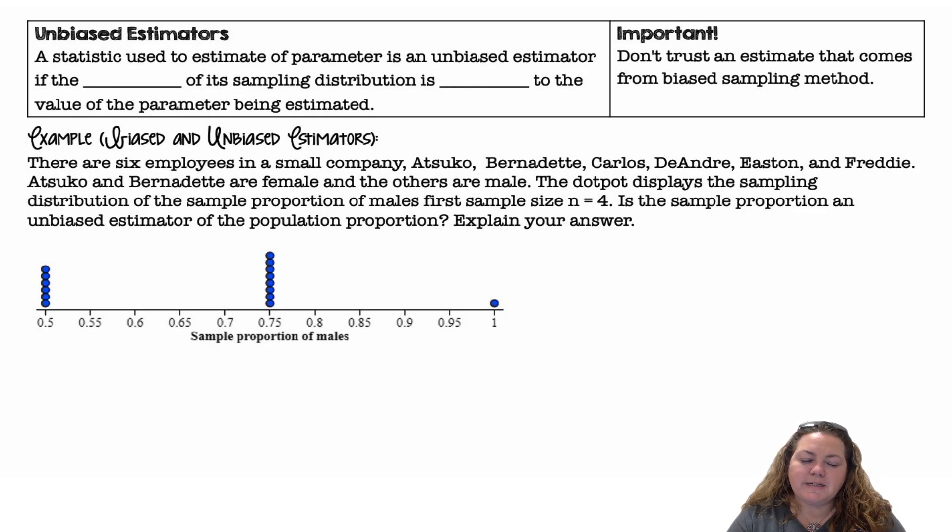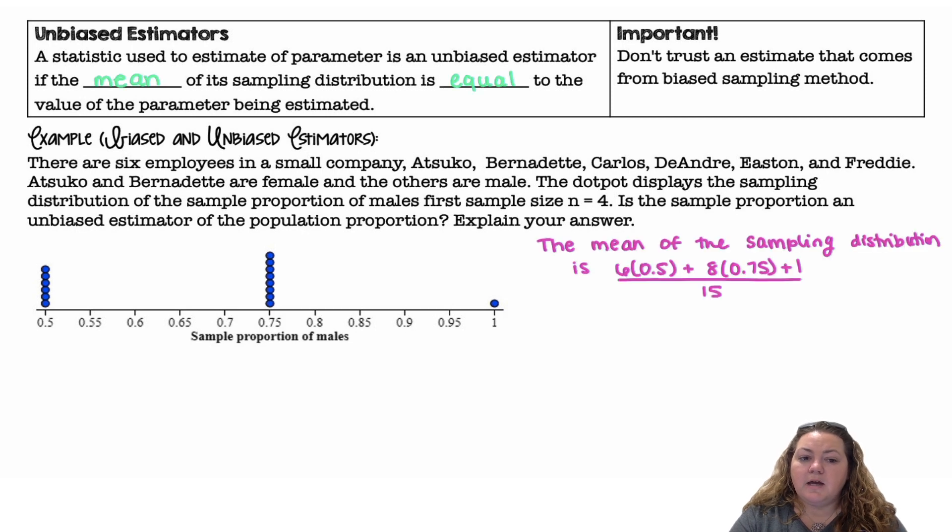Alright, so an unbiased estimator is a statistic used to estimate a parameter. It's an unbiased estimator if the mean of the sampling distribution is equal to the value of the parameter being estimated. So important, don't trust an estimate that comes from a biased sampling method.